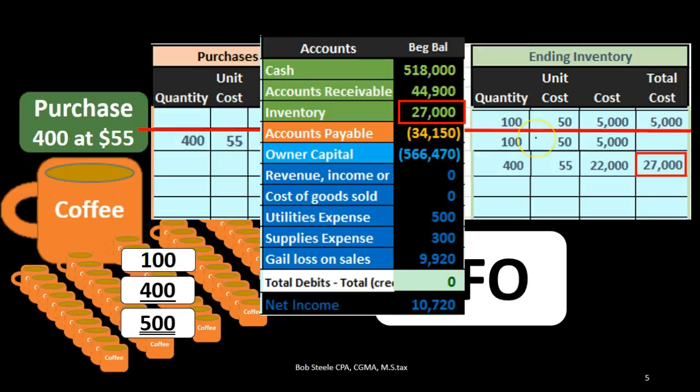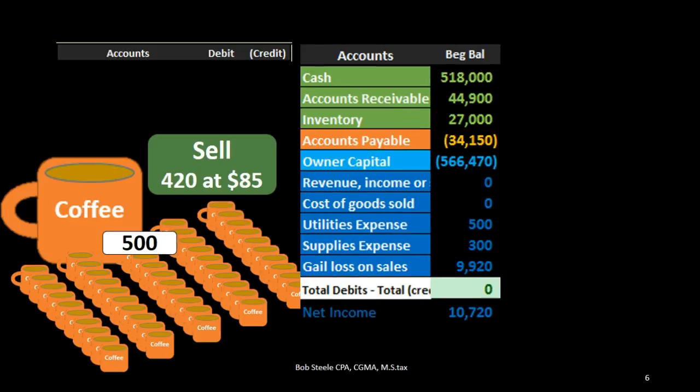Did we sell the cheaper old ones at $50 or the more expensive newer ones at $55? The mug itself is completely the same — the price difference is only due to the time period of purchase. Under FIFO, the answer is the old ones: first in, first out, meaning the cheaper ones are sold first. But let's look at the actual sales transaction.